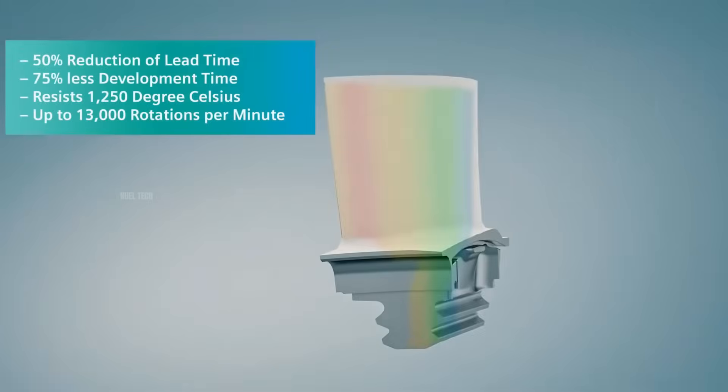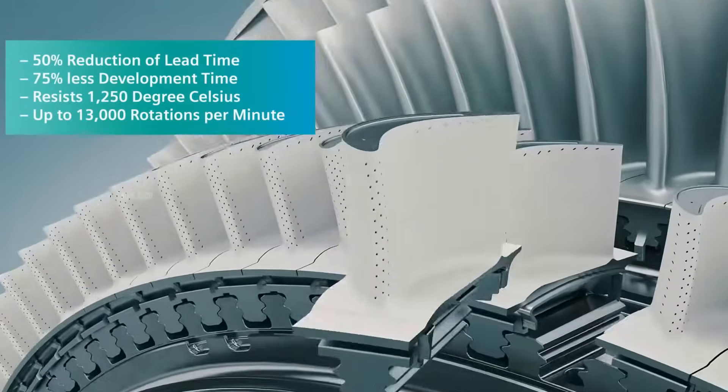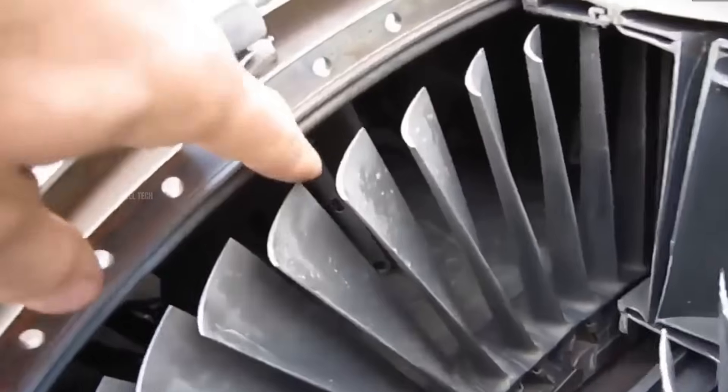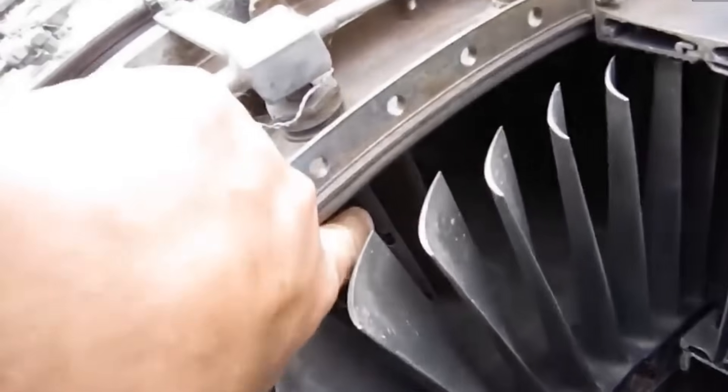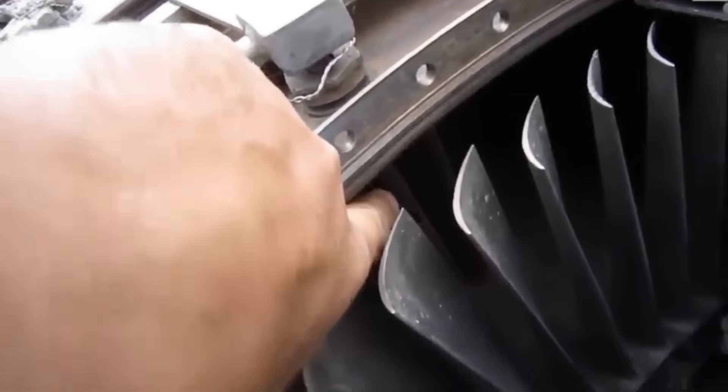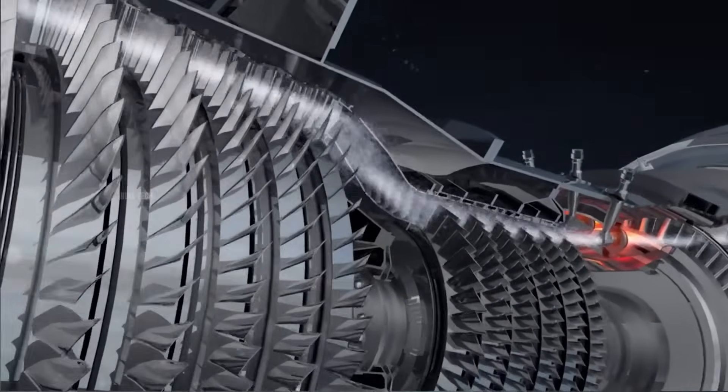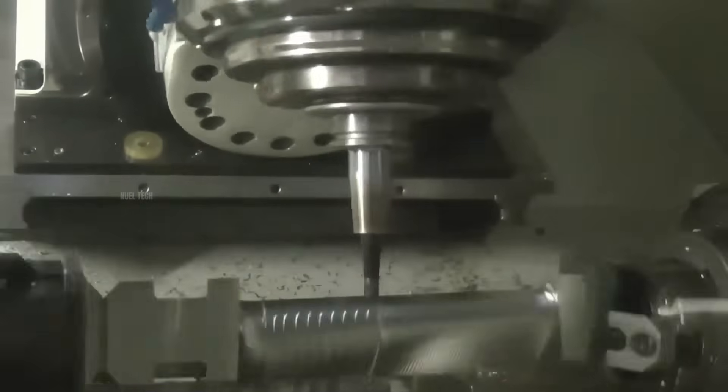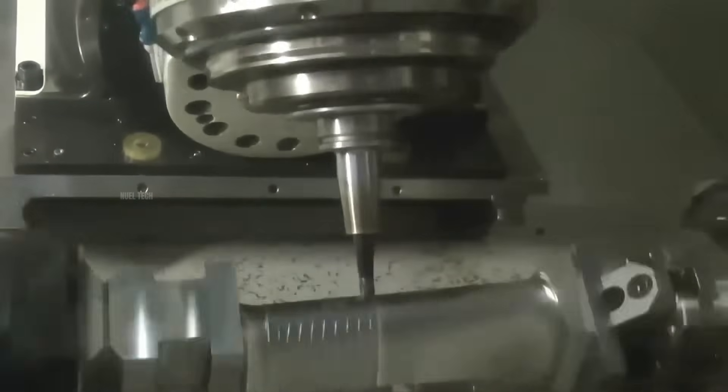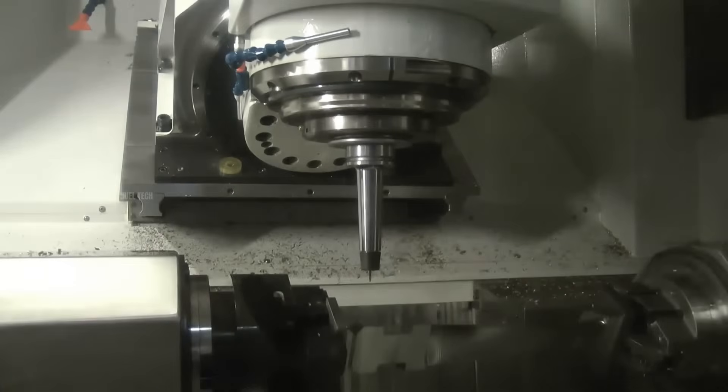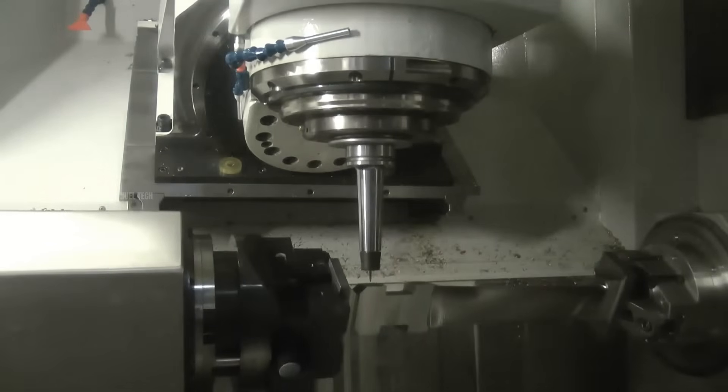The manufacturing process of turbine blades depends heavily on their position within the engine. Blades located toward the rear, where temperatures are relatively lower, can be produced using CNC machines because their shapes are simpler and do not include internal cooling channels.